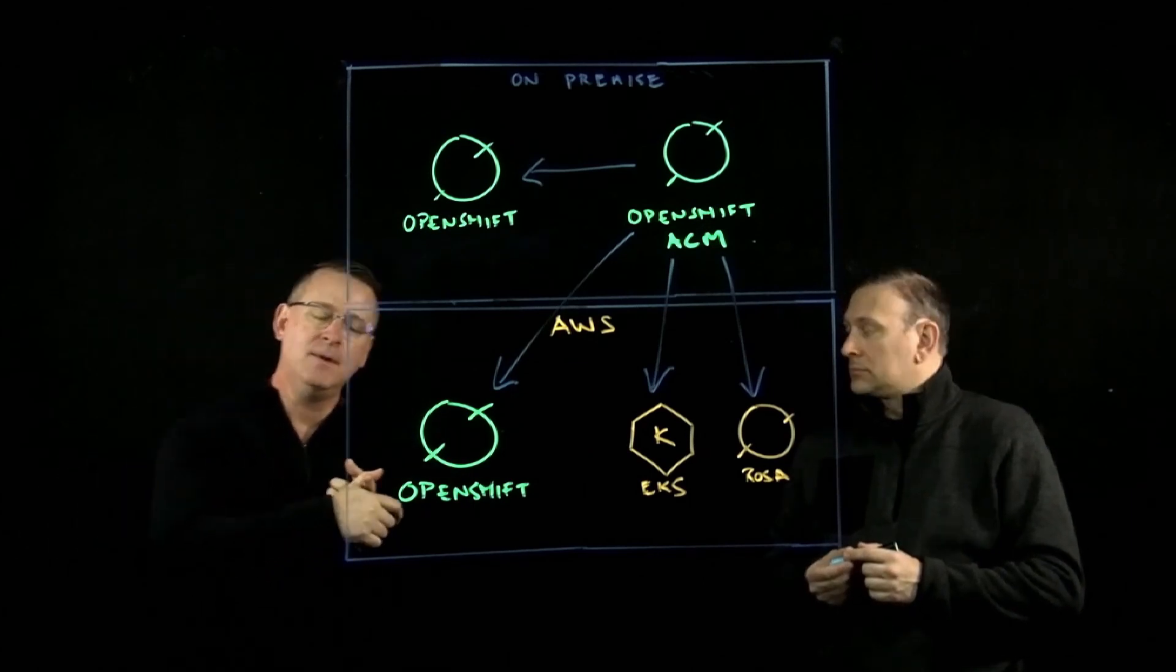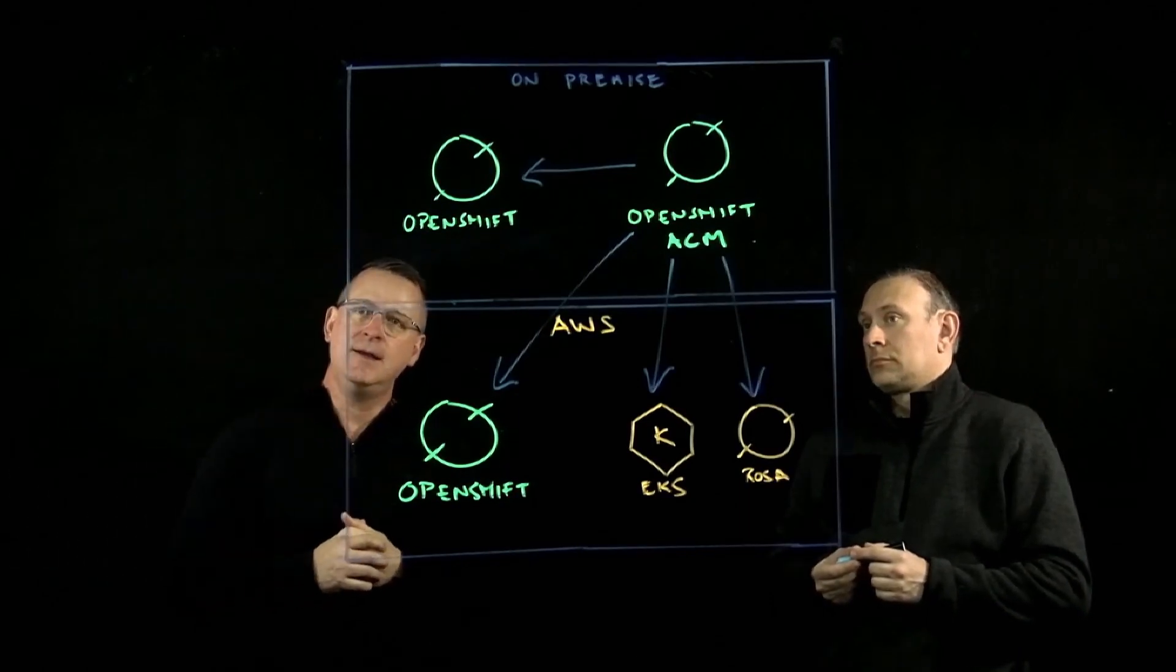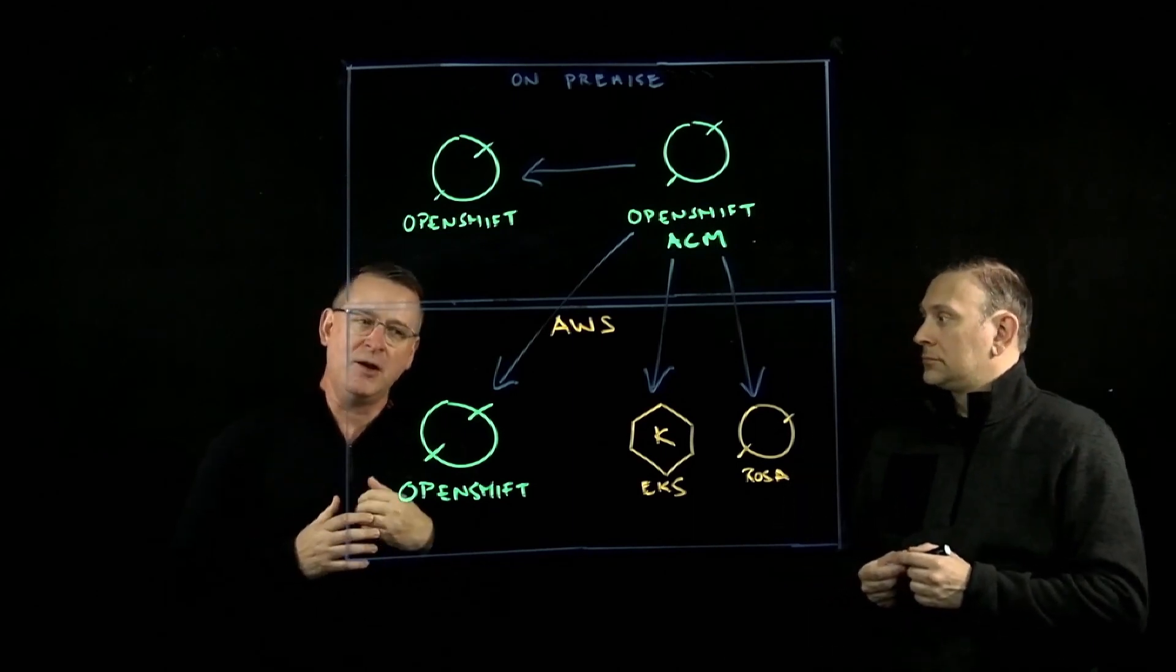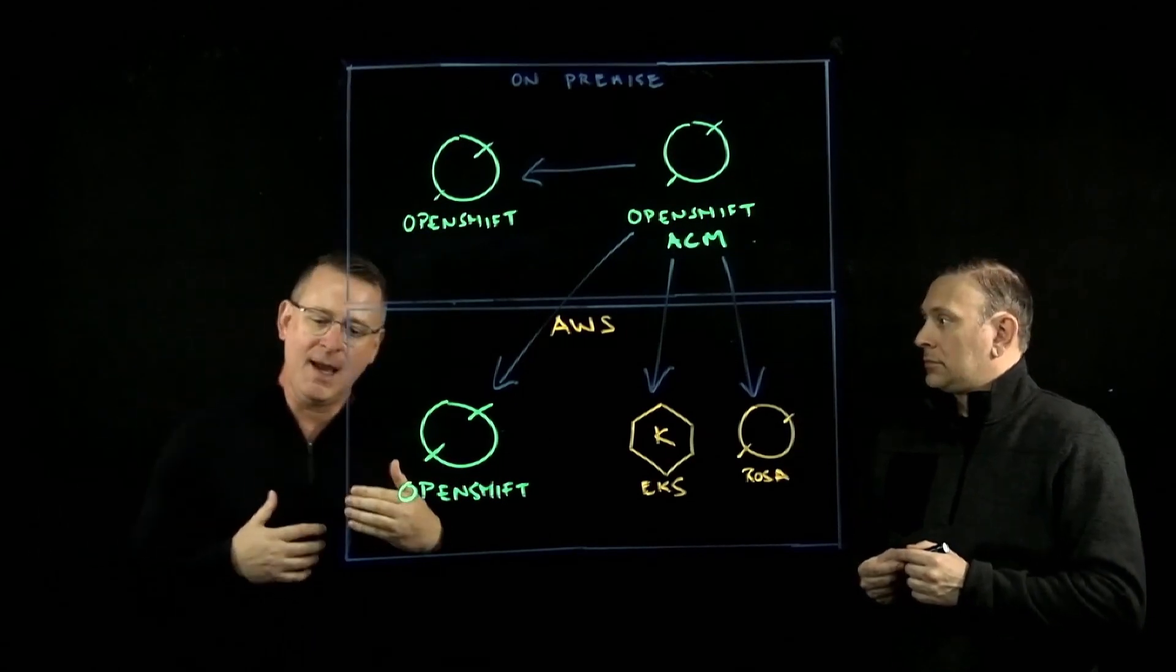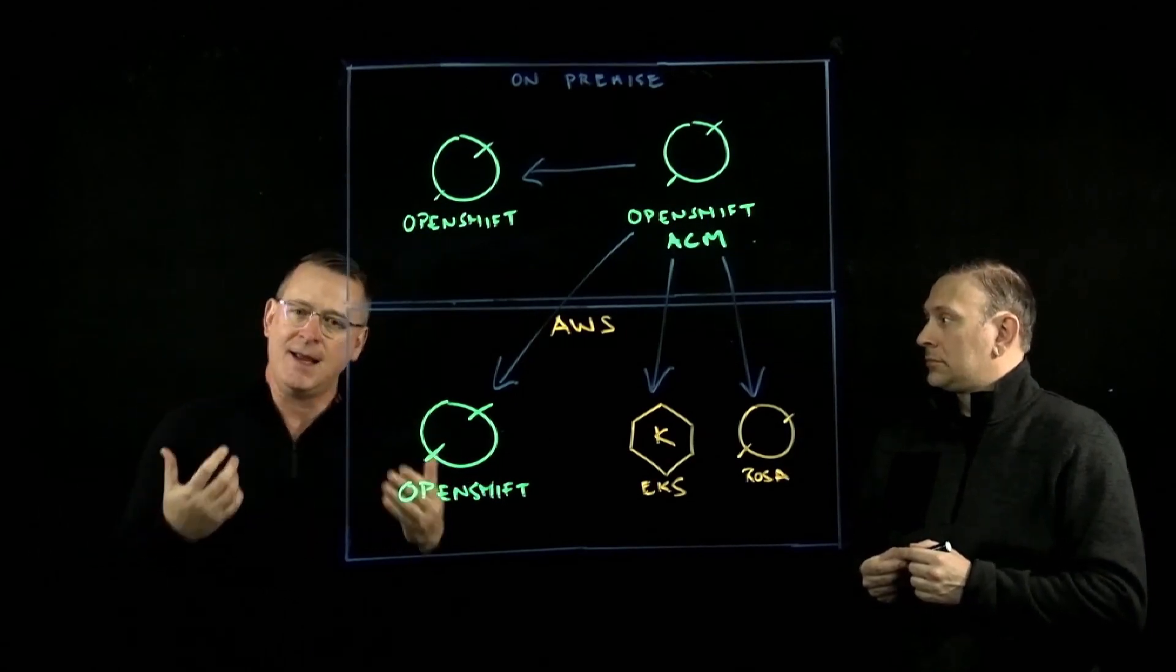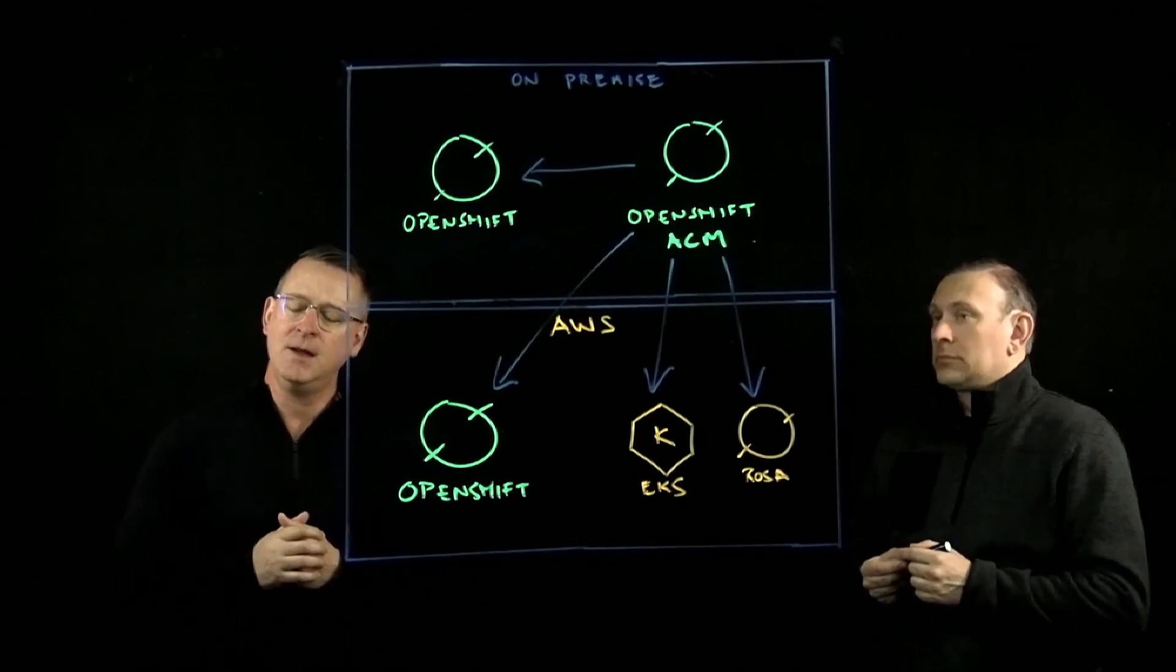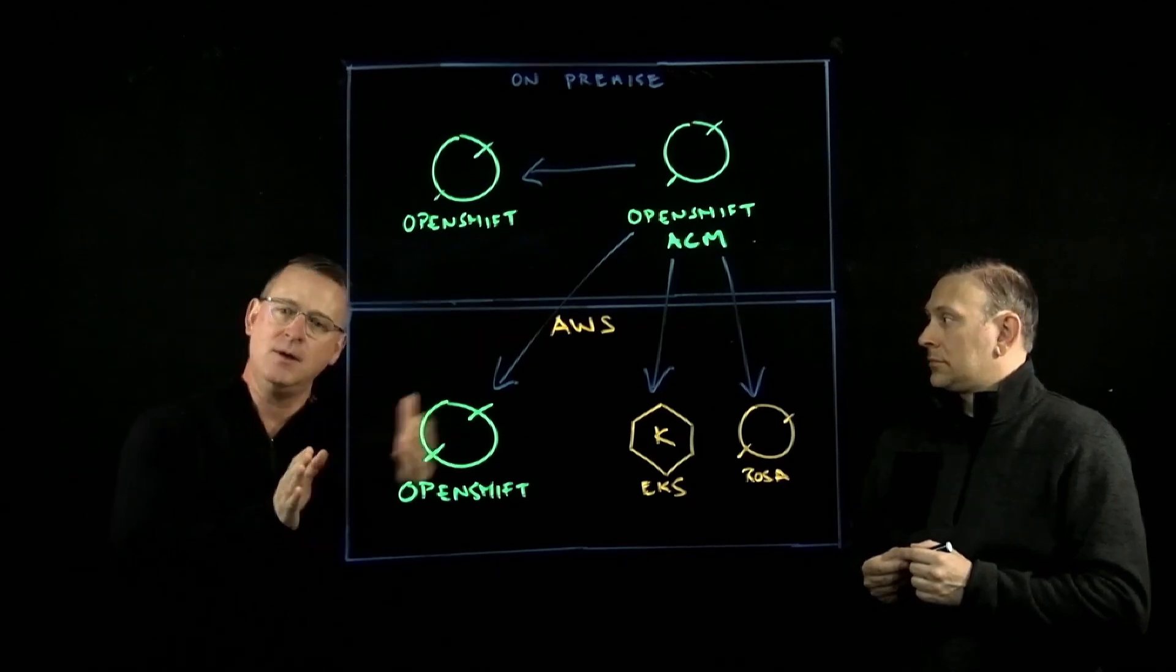A second way is if you already have OpenShift up and running and installed, there is an operator that can be installed inside of OpenShift, which is the ACM operator. That operator provides the ability to do all those things I just described. Right. So again, you create that secure token service, that connection into AWS or into your on-premise environment. And with that version of OpenShift, you can now push out these clusters.